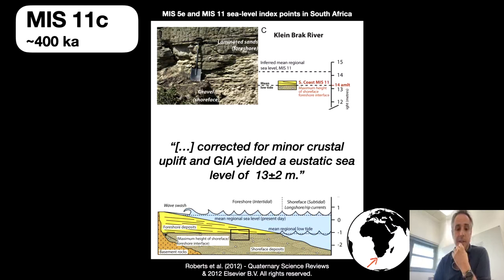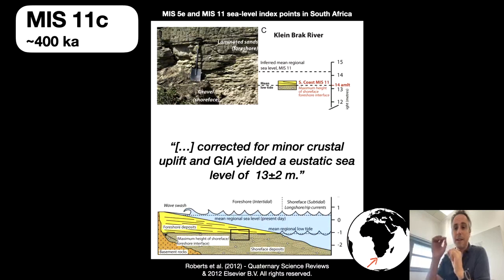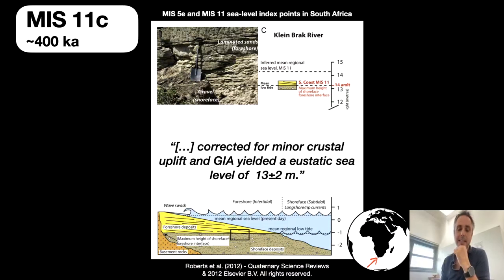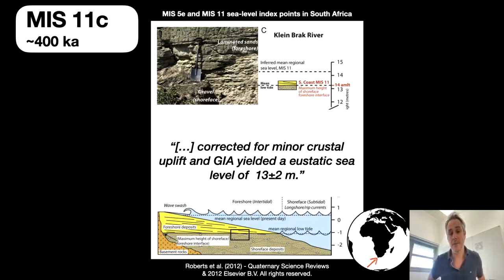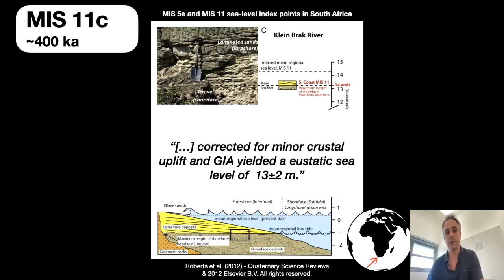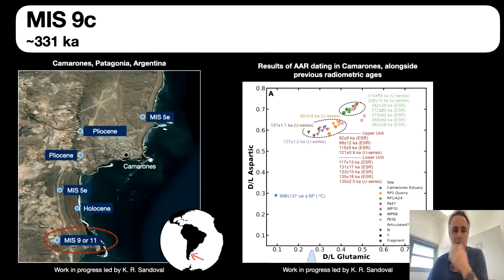A very interesting and still recent study is by the late Dave Roberts. In 2012 they published a very convincing stratigraphy looking at MIS 5e and the difference between MIS 5e and MIS 11 in South Africa. They concluded that we are on the high end of the Raymo and Mitrovica estimates — MIS 11 would correspond to a sea level in the 13-plus or 10-plus meter range.